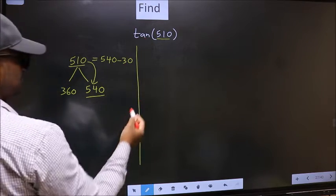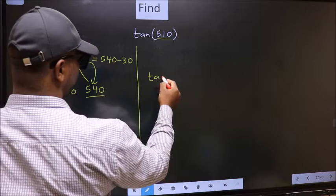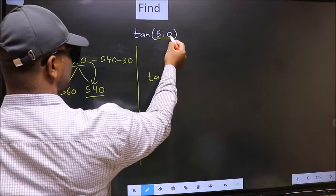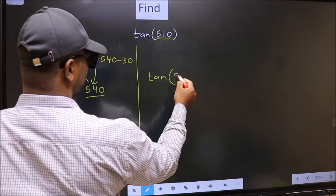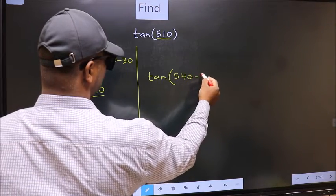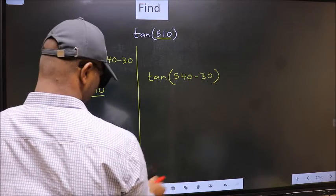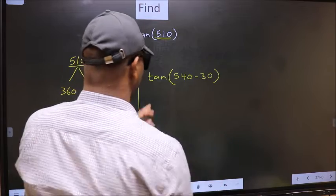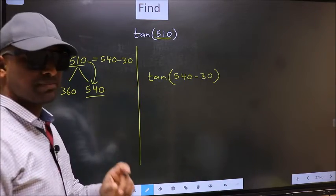So this will become tan. In place of this, now we write this: 540 minus 30. 540. This is your step 1.